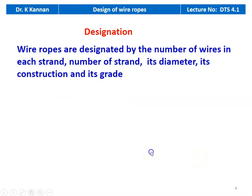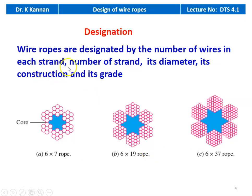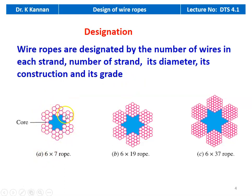Wire ropes are designated by the number of wires in each strand and number of strands, their diameter, construction, and grade. The types are: six by seven rope, six by 19 rope, and six by 37 rope. For six by seven: there are six strands around the core, and each strand has seven wires.